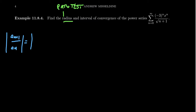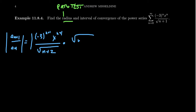For this series, a_{n+1} gives us negative 3^{n+1} times x^{n+1} over the square root of n+2 — note that n+1+1 is n+2. Taking the reciprocal of a_n gives the square root of n+1 over negative 3^n times x^n. Combining: negative 3^{n+1} over negative 3^n simplifies, and taking the absolute value gives us a positive 3.